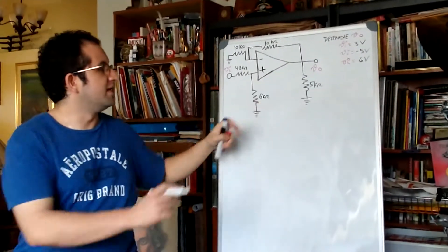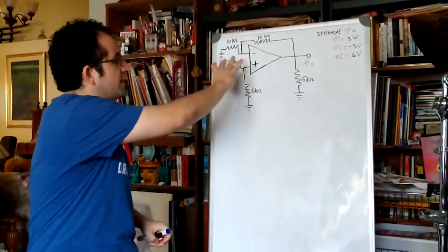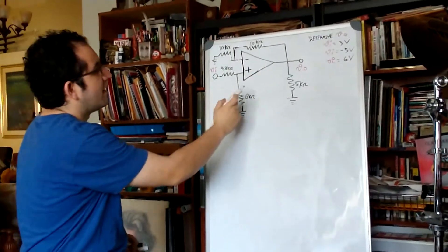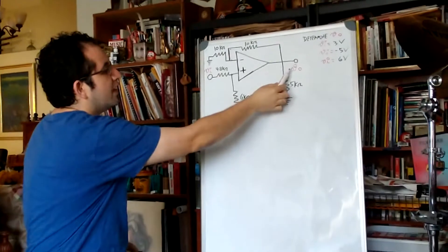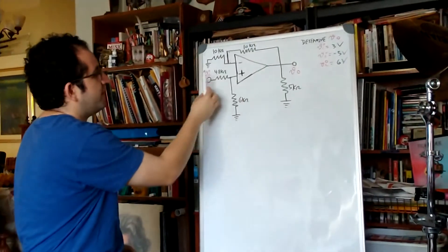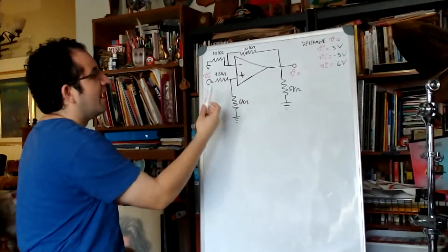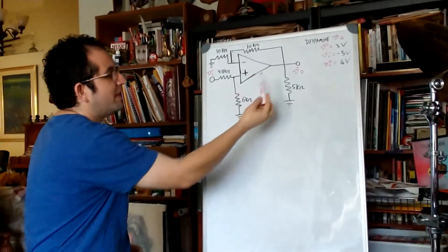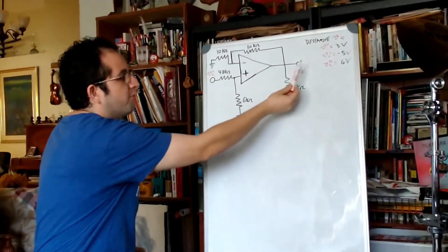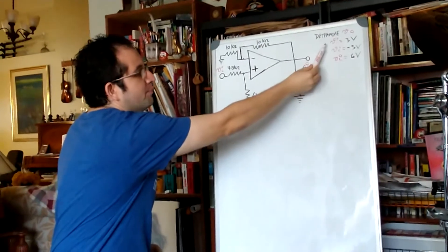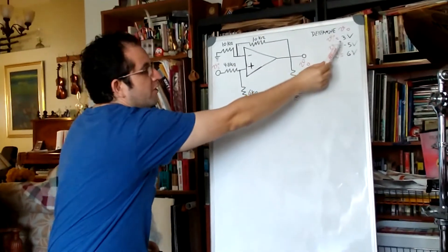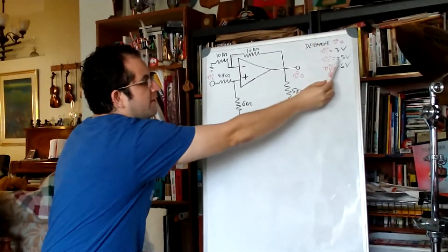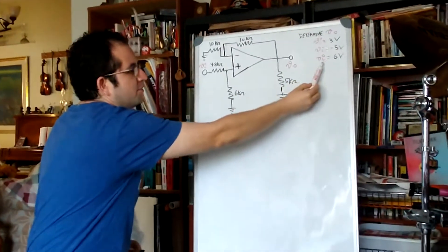We have this circuit in this configuration and we need to determine V out as a function of V in, and then find what's V out for V input 3 volts, V input minus 5 volts, and V input 6 volts.